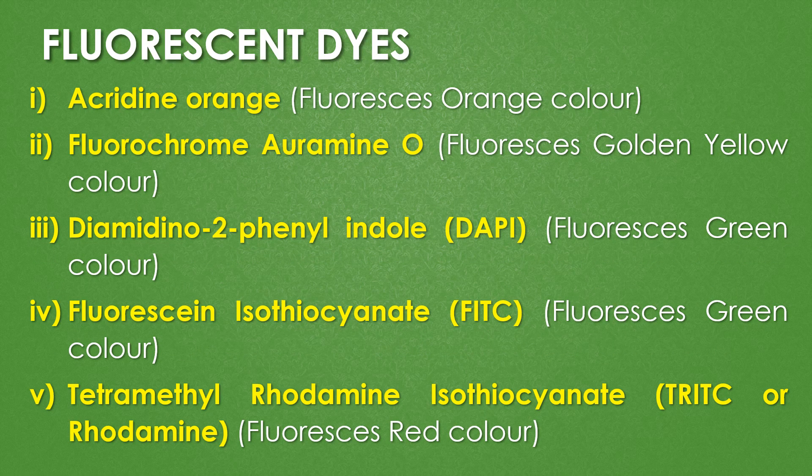Some of the fluorescent dyes used for staining are: acridine orange, which fluoresces orange color; fluorochrome auramine O, which fluoresces golden yellow color; DAPI (diaminophenyl indole), which fluoresces green color; FITC (fluorescence isothiocyanate), which fluoresces green color; and TRITC or rhodamine (tetramethyl rhodamine isothiocyanate), which fluoresces red color.